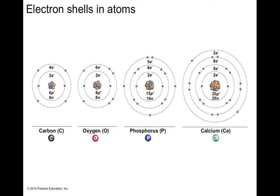Carbon can make four single bonds, two double bonds, or one single and one triple bond — giving it a lot of options. Oxygen has six electrons in its valence shell — because you subtract two from the atomic number for the filled inner shell — and it needs two more to reach eight. So oxygen can make either one double bond or two single bonds, which is more limiting than carbon's versatility.